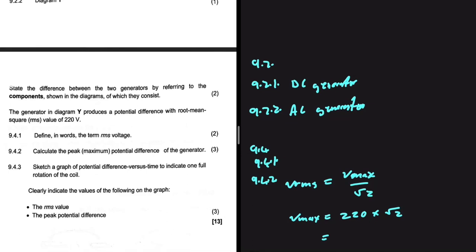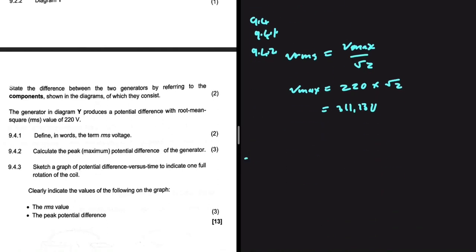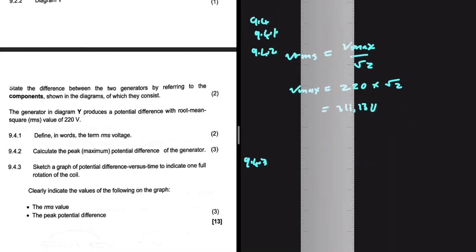The last question, 9.4.3: sketch a graph of potential versus time to indicate one full rotation of the coil. Clearly indicate the values of the RMS value and the peak potential difference. We're interested in diagram Y, the AC generator, so we're supposed to have a graph of potential difference versus time for an AC generator. It looks different from the DC generator.